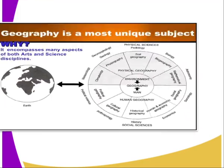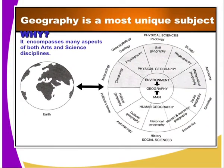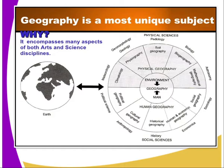We start by looking at the disciplines that are related to geography. Geography is the most unique subject — it is related in many aspects. We have climate at the heart, and a number of branches including human geography, environment, and physical geography. They all give us geography.